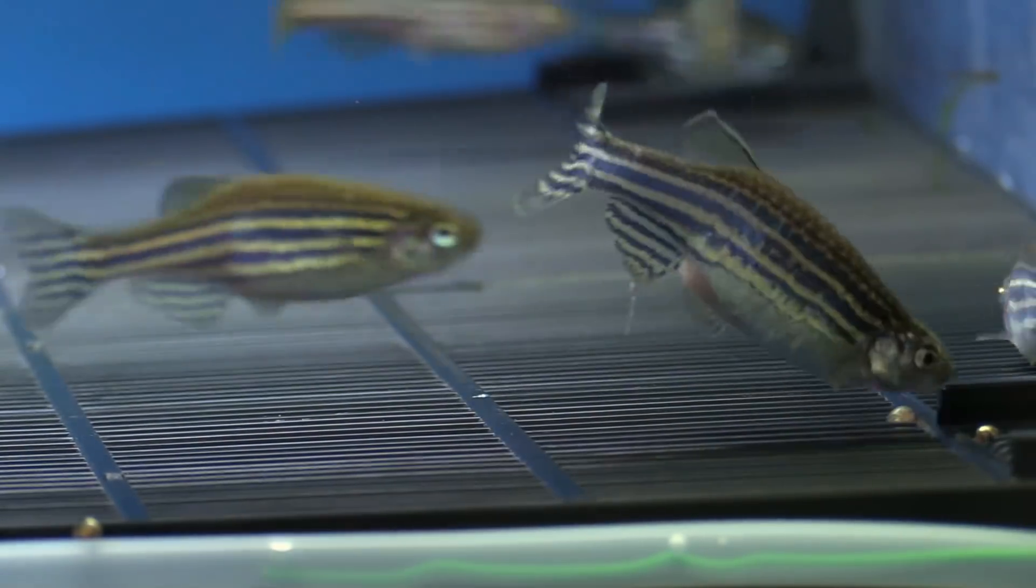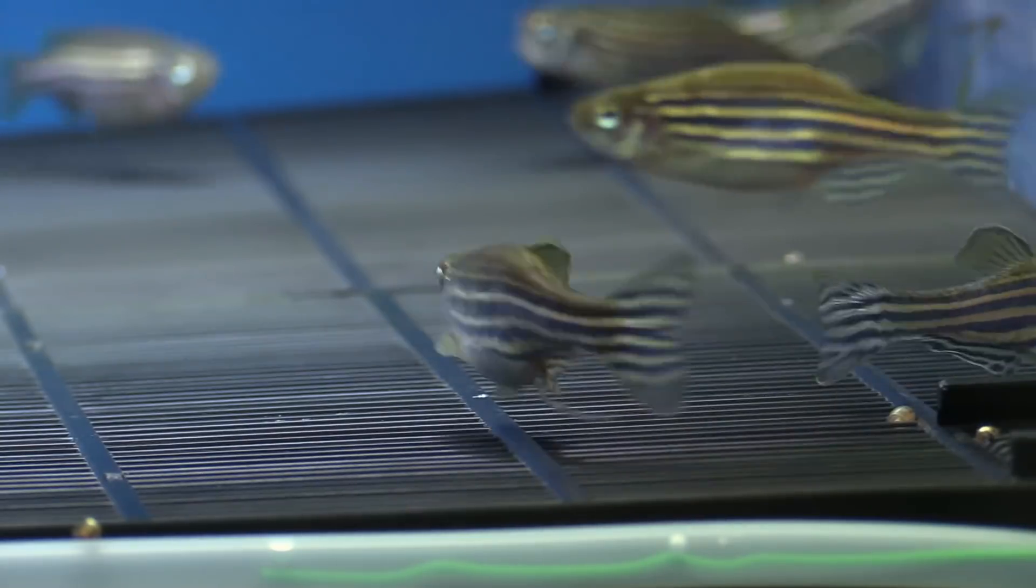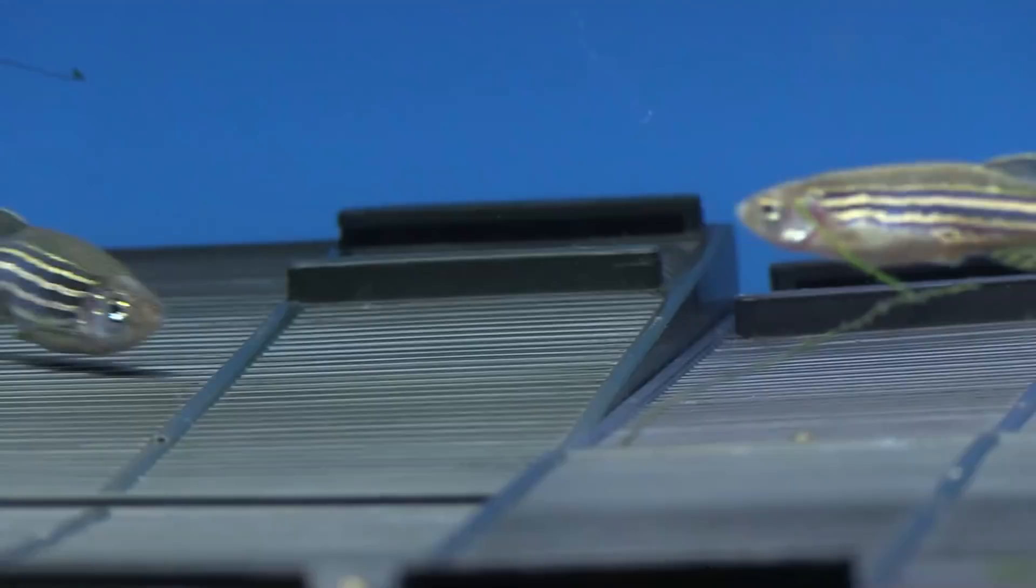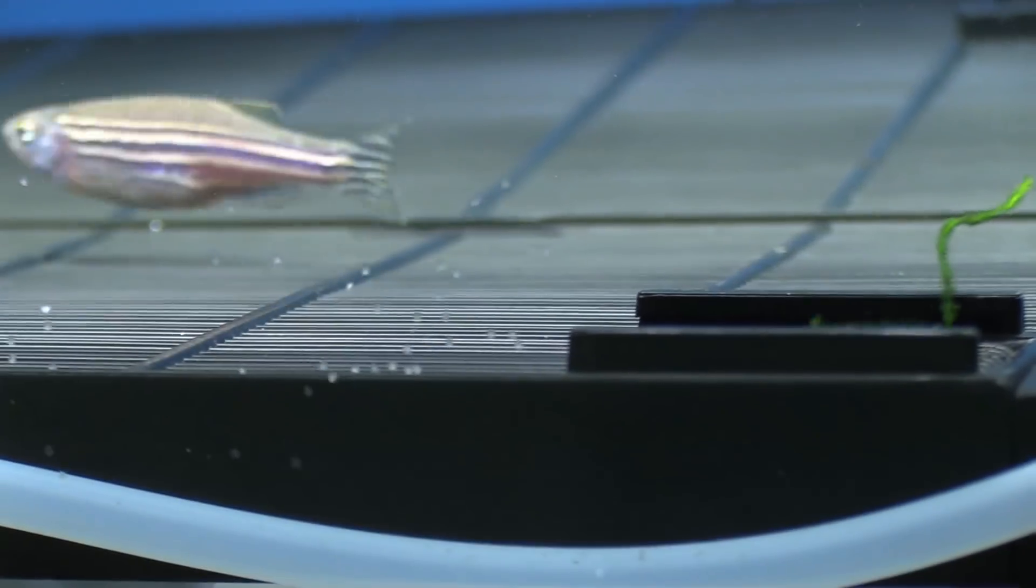Zebra fish reach sexual maturity at the third month of their development. The breeding fish should be between 7 and 18 months of age for maximum embryo production. An optimal breeding frequency for zebra fish is every 10 days.